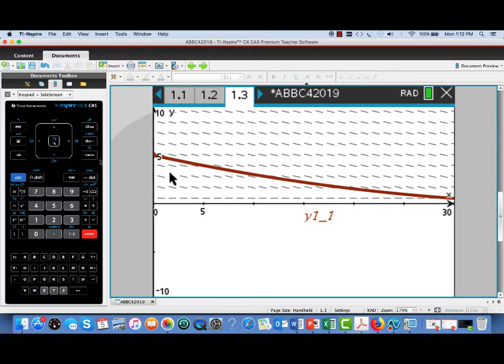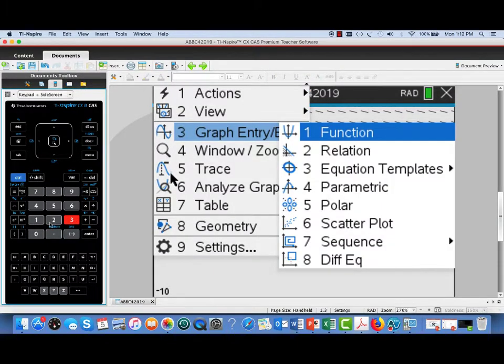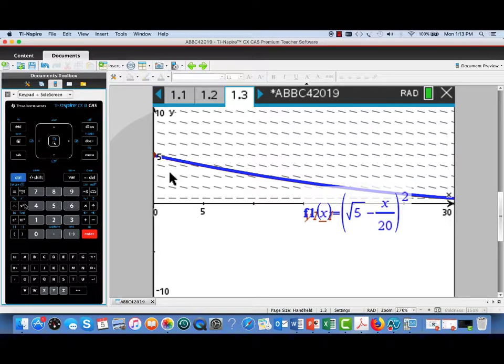Now, supposing that I had solved this differential equation by hand and I wanted to check to see if my solution was reasonable. I could compare it to this numerically generated solution curve. So, I'm going to set the graph type back to function, the usual one. And I'm going to go ahead and enter the solution that we would have gotten by hand.